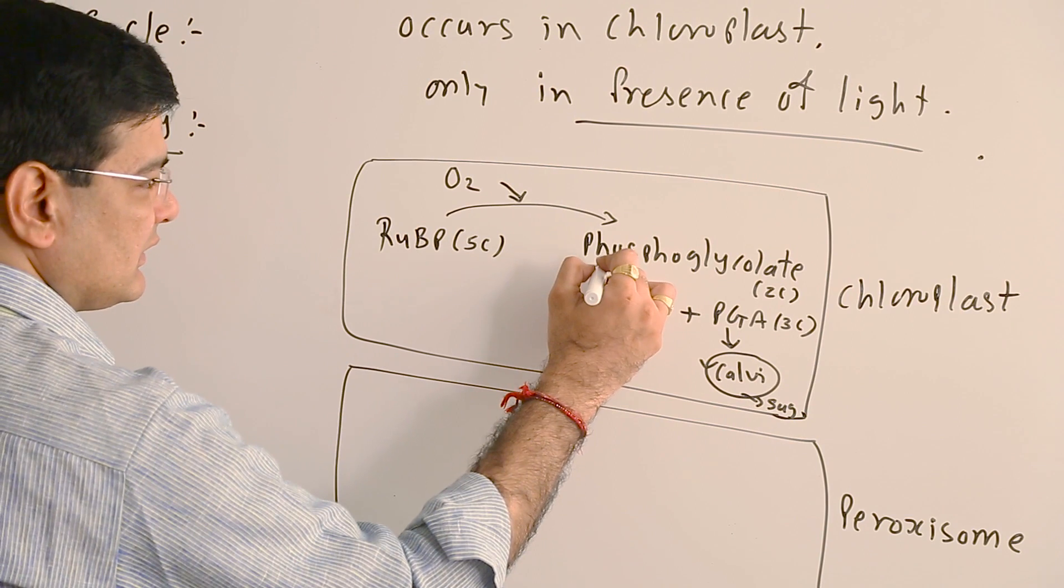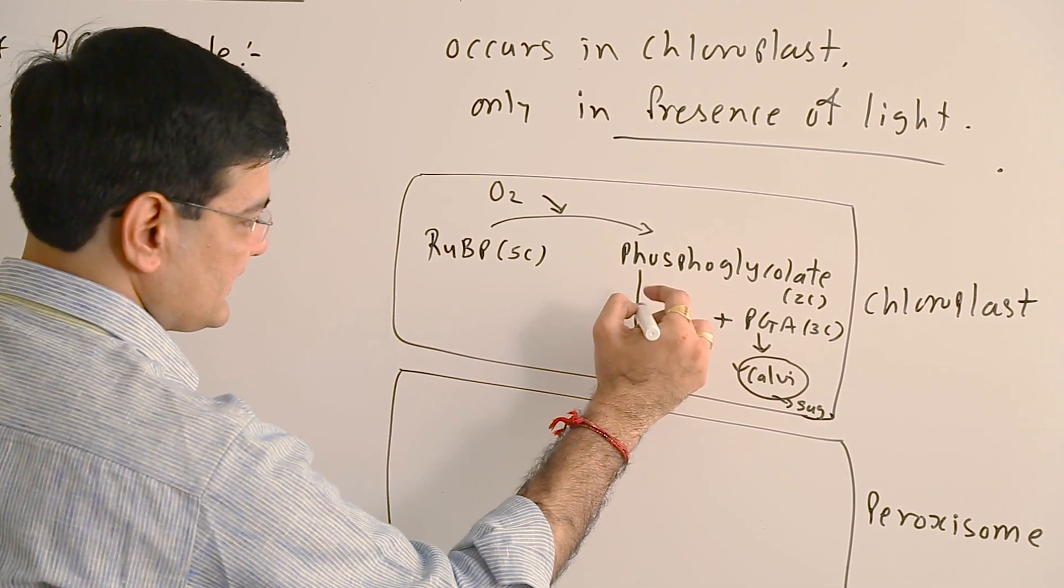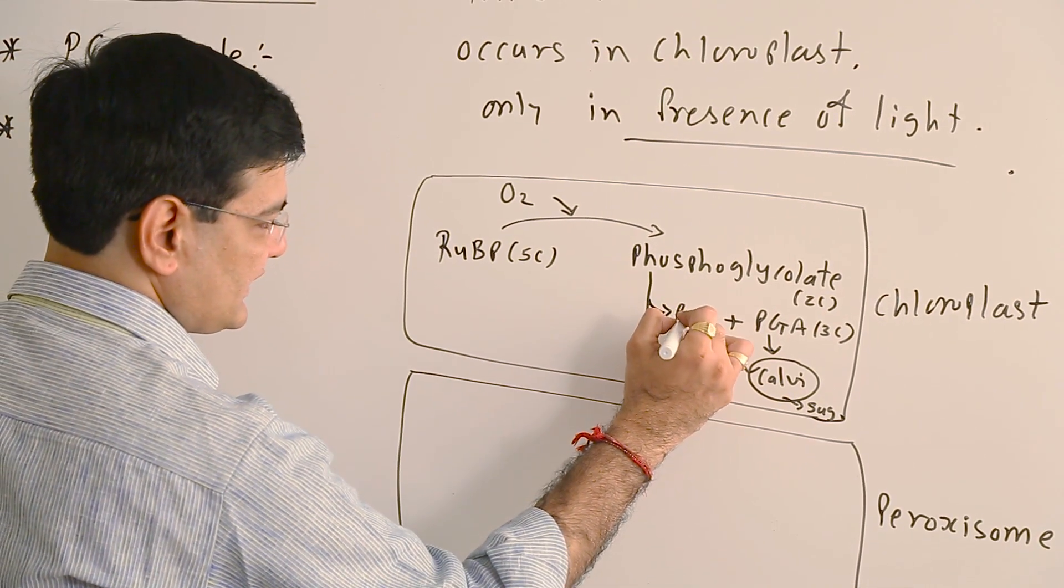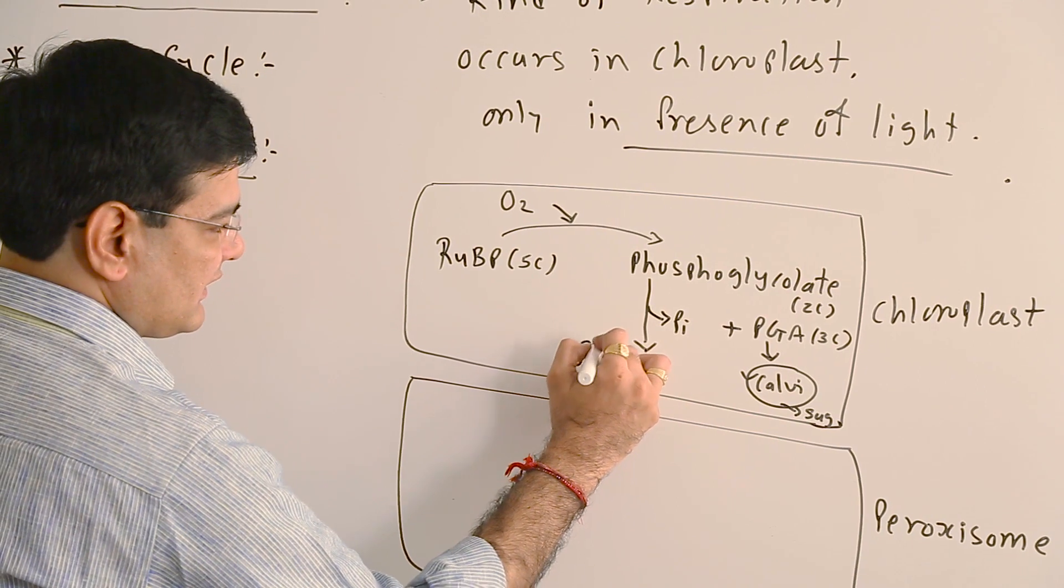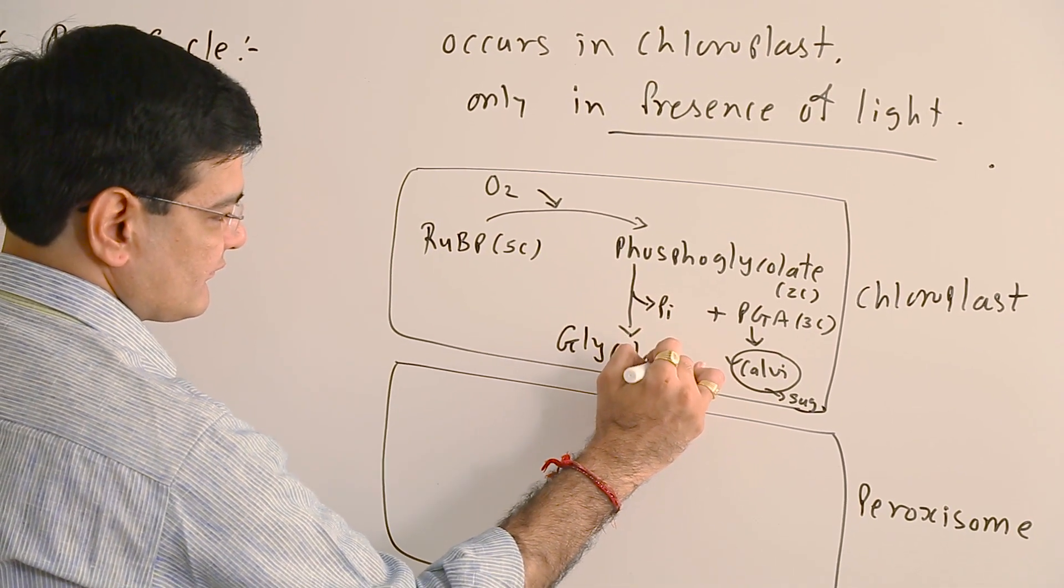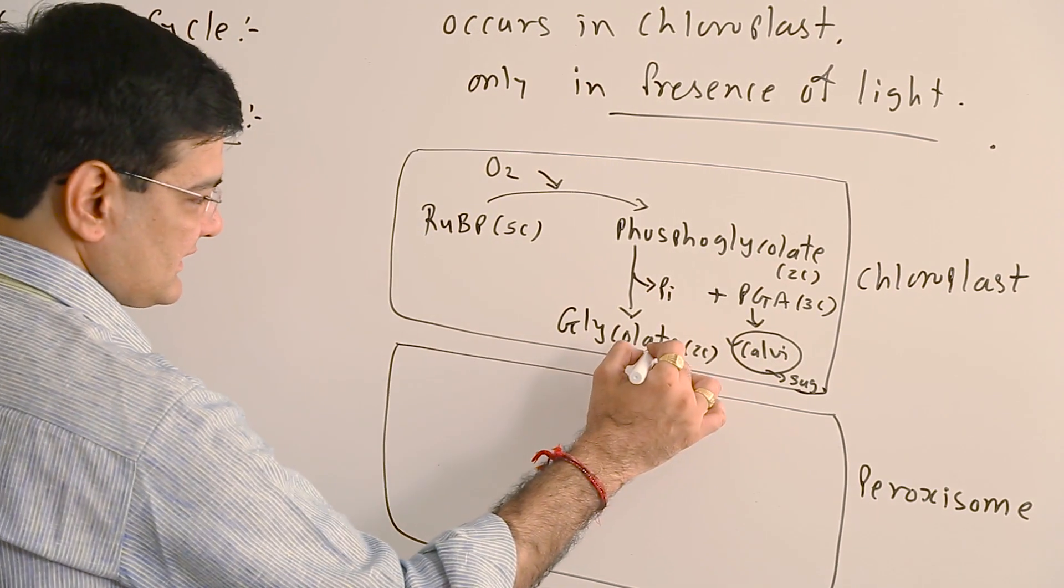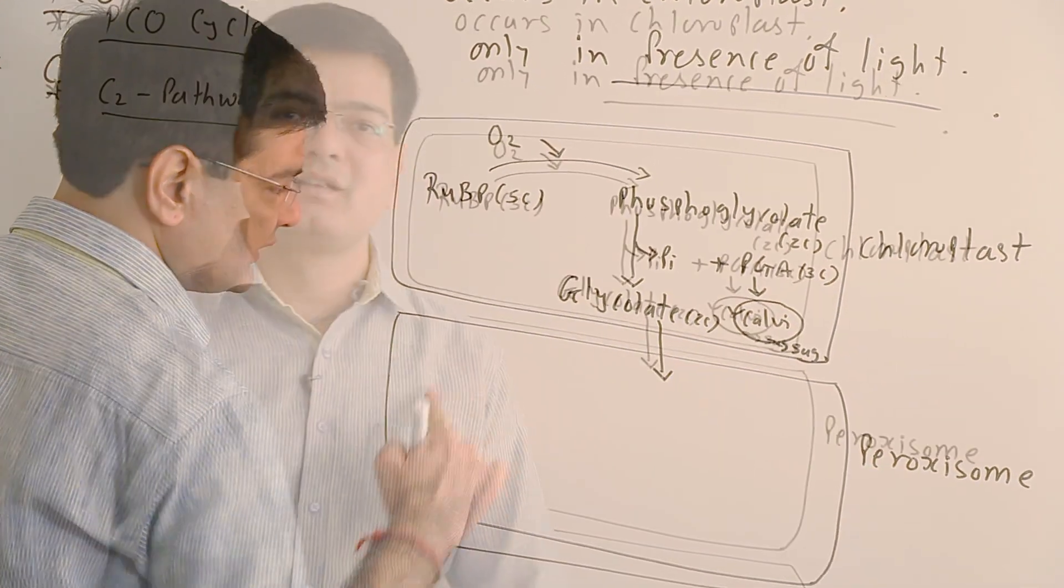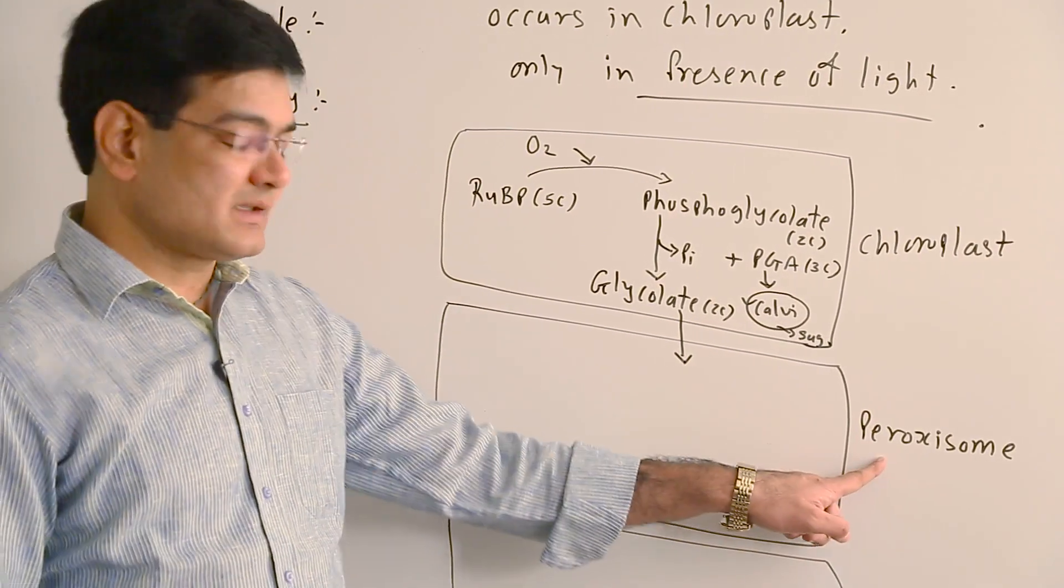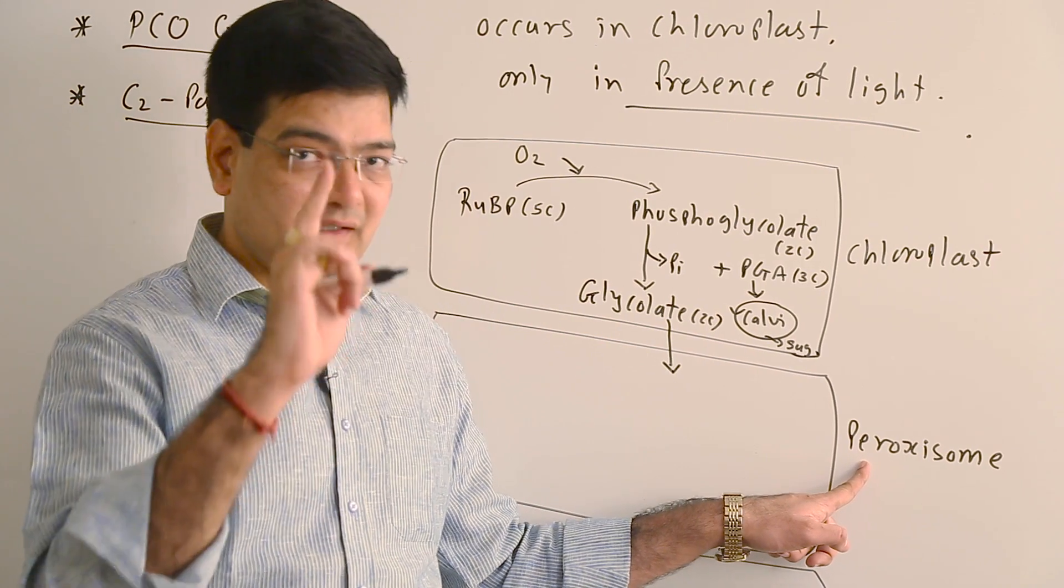Now this phosphoglycolate carries out the reaction further. First, it undergoes dephosphorylation by release of inorganic phosphate to form glycolate. It contains two carbons. This glycolate diffuses out from the chloroplasts and enters into the peroxisome. Peroxisome is a single membranous cell organelle containing oxidation enzymes.